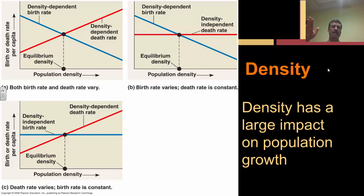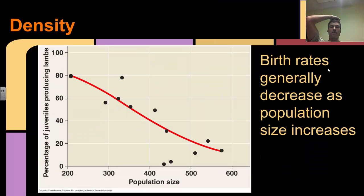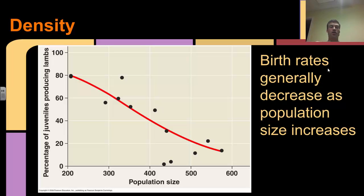When they get outside of that ideal density, other factors help regulate their population size. Birth rates are generally going to decrease as population size increases - you have more organisms in an area, and you don't want to continue adding offspring because you'd have less and less resources available for yourself and for your offspring. So birth rates generally decrease as population size and therefore population density increases.